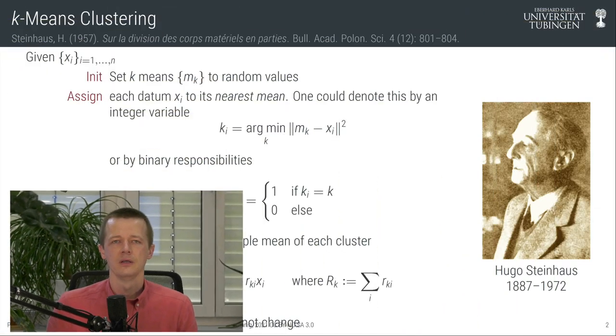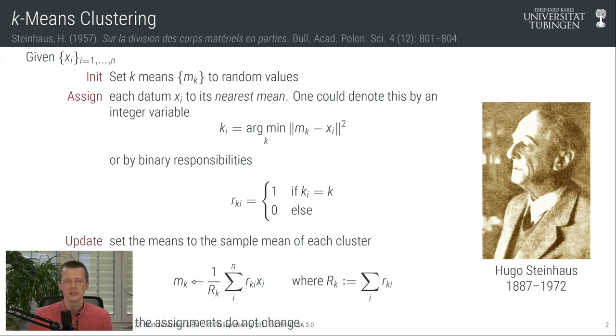Hello and welcome to probabilistic machine learning lecture number 22. We have momentarily departed from our ongoing extended programming modeling example to look at a slightly different type of model, which will lead us as a detour to a new tool that we can then use again in our topic model example. That model class is one for clustering and it will lead us today to the concept of mixture models.